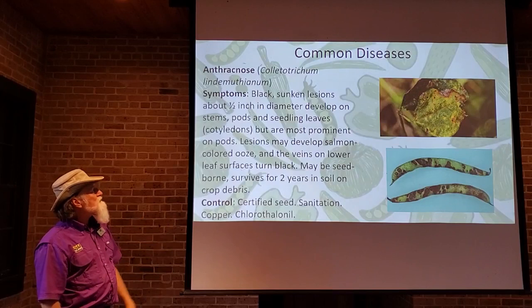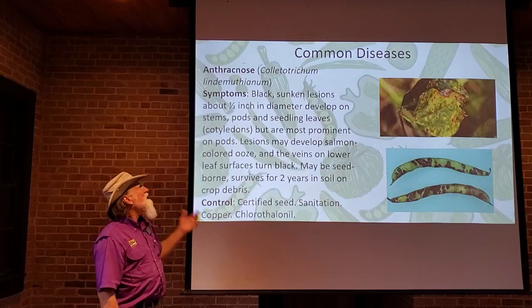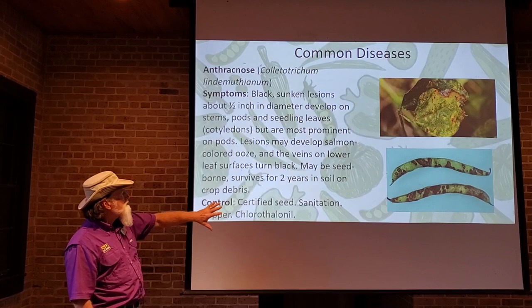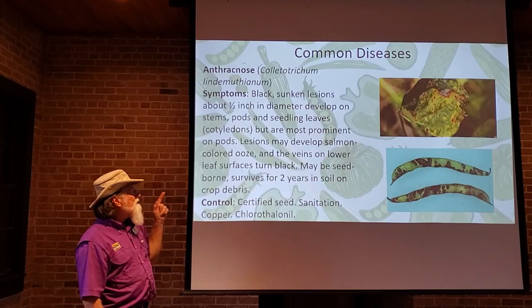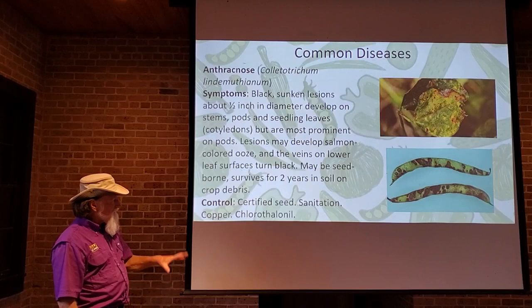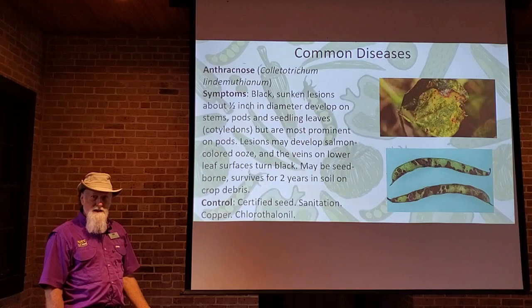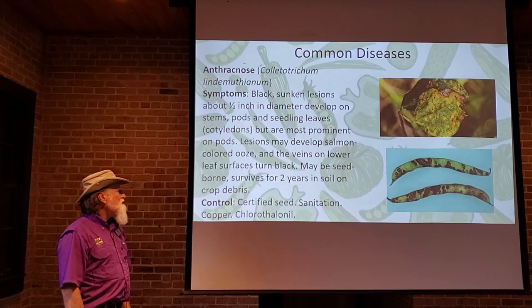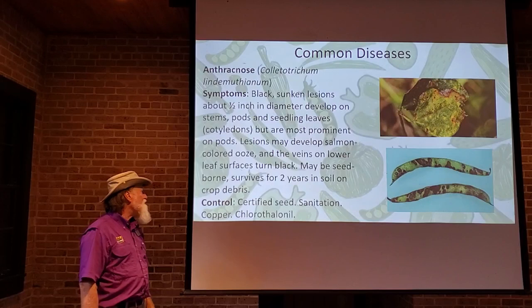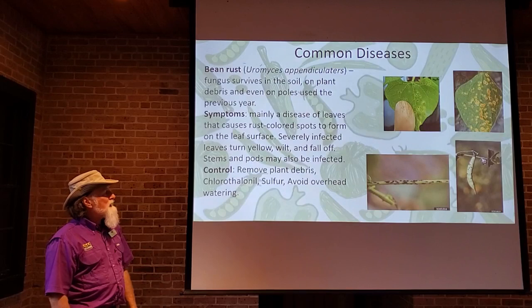Anthracnose on legumes is caused by Colletotrichum. The lesions are dark, necrotic, sunken, and often develop concentric circles — affecting pods and leaves, essentially all above-ground surfaces. It is a fungal disease that can be seed-borne, so use certified seed. The fungus can survive up to two years on crop debris in the soil, so sanitation is critical. Some fungicides are also available. Start clean and stay clean to avoid many of these problems.